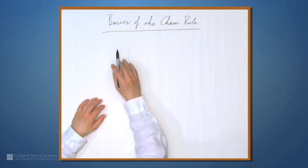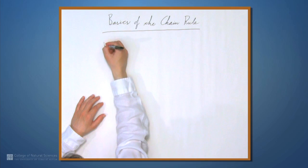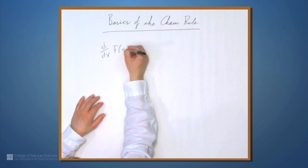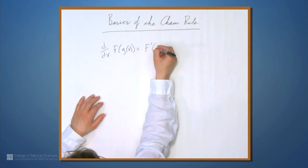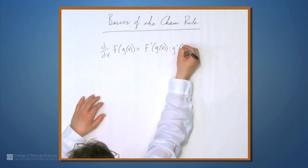So we're here at the example table, and in this video we're going to look at the basics of the chain rule. The chain rule says more or less that the derivative of f(g(x)) is f'(g(x)) times g'(x).